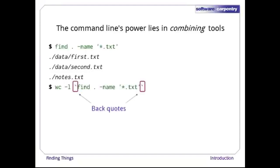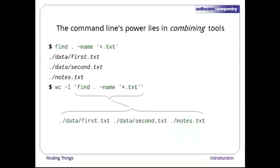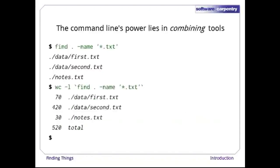This is exactly what the shell does when it expands star, question mark, and other built-in wildcards, but more flexible since we can use any command we want. So when the shell executes this line, the first thing it does is run the command inside the back quotes. Its output is the three file names: data/first.txt, data/second.txt, and notes.txt. The shell then replaces the back quotes with that output to construct the command 'wc -l data/first.txt data/second.txt notes.txt'. As you can see, that does what we originally wanted.